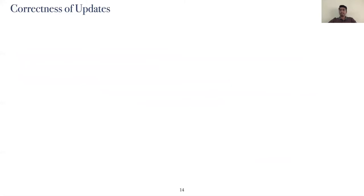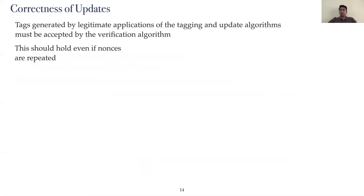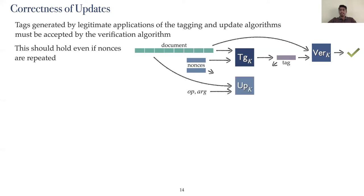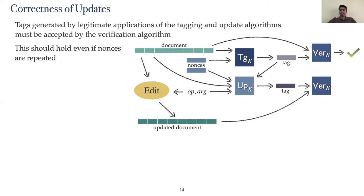We now take a look at correctness. Correctness is a functionality requirement, not a security requirement. The basic notion requires that tags generated via legitimate sequences of the tagging and update algorithms must be accepted by the verification algorithm even if the nonces are repeated. Consider a document represented here by a green list. Suppose we run the tagging algorithm on this document using a fixed key, id, and some nonce to generate a tag represented by the purple rectangle. Such a tag should successfully verify under the same key and id. Running the update algorithm with the same key and id, some nonce, edit operations, and the previously generated tag produces a new tag. Correctness requires that this updated tag successfully verifies for the document generated by applying those edit operations.